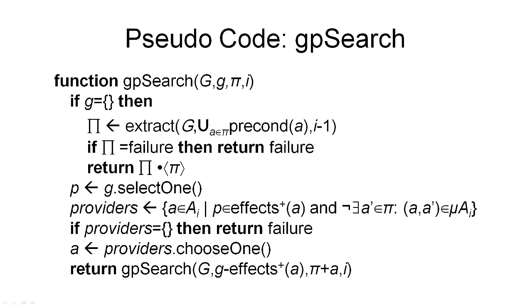The function GP search takes four arguments. The first argument is the planning graph. The second argument is the goal we are trying to achieve in layer pi. So, i identifies the layer in which we try to achieve the set of goals. And pi are the actions from layer ai, the action layer ai, that we have chosen to add to the plan.